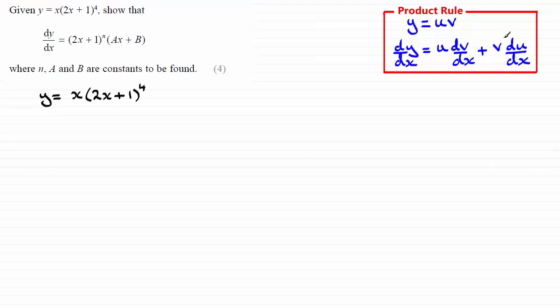Okay, so let's say we take u as the x and v as the 2x plus 1 to the power 4. Okay, so we've got to start then by having dy by dx.